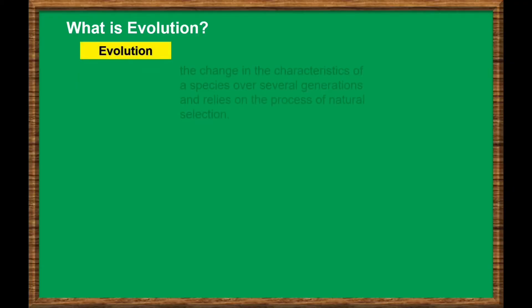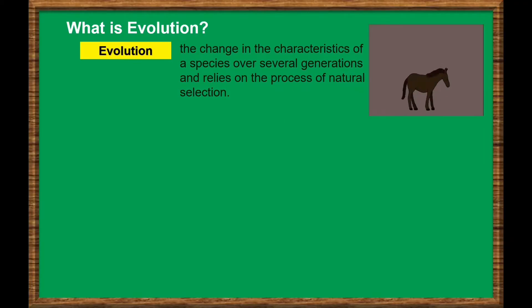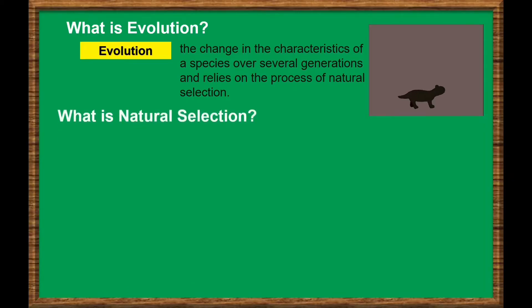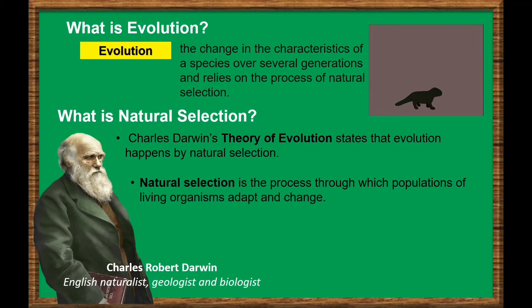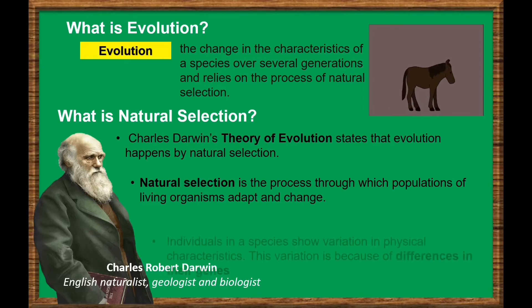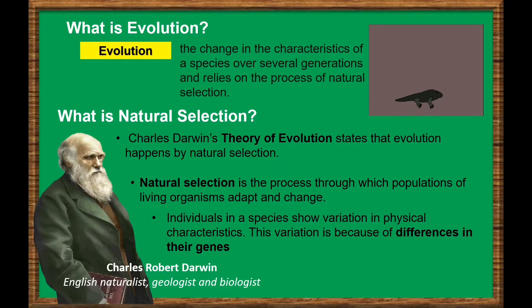What is evolution? Evolution in biology is defined as the change in the characteristics of a species over several generations and relies on the process of natural selection. What do we mean by natural selection? Charles Darwin's theory of evolution states that evolution happens by natural selection, which means natural selection is the process through which populations of living organisms adapt and change. Individuals in a species show variation in physical characteristics. This variation is because of differences in their genes.